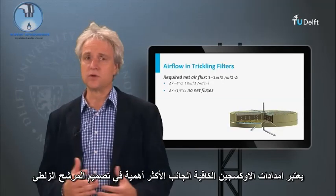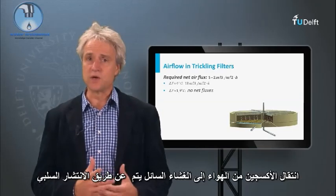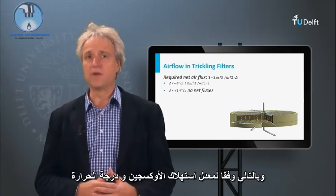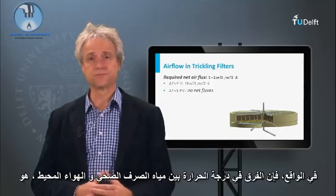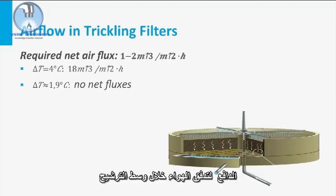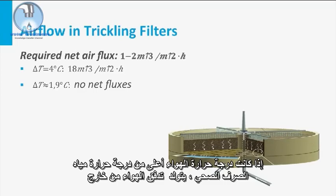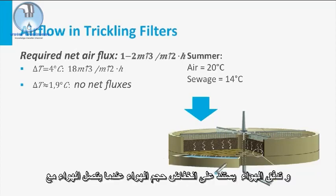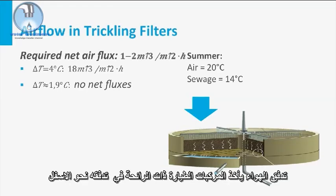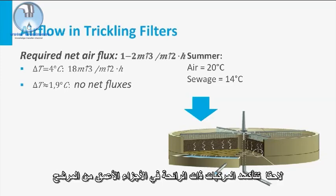Adequate oxygen supply is considered the most important aspect of a trickling filter design for sewage treatment. The transport of oxygen from the air to the liquid film is driven by passive diffusion, thus by the oxygen consumption rate and the temperature. In fact, the temperature difference between the sewage and the surrounding air is the driver for convective airflow through the filter bed. If the air temperature is higher than the sewage temperature, then an airflow from outside the filter to inside the filter bed is created. This airflow is based on the decreasing air volume when the air comes into contact with the cold sewage flow. The airflow takes possible odorous volatile compounds in its downward flow. The odorous compounds are subsequently oxidized in the deeper parts of the bed.